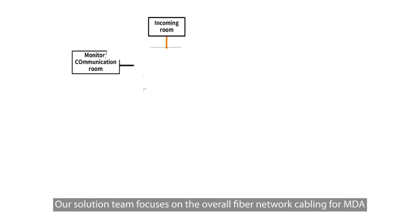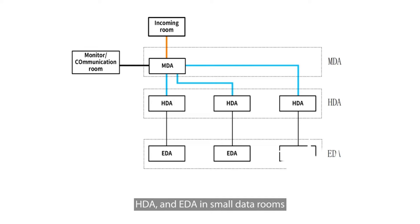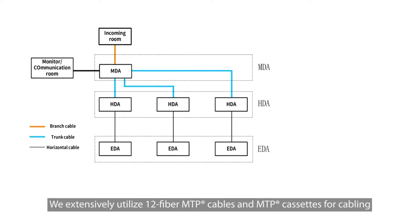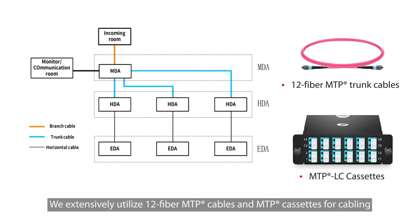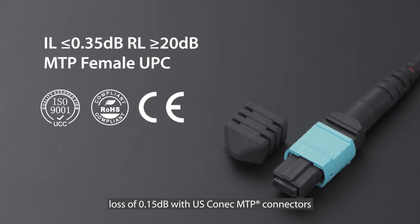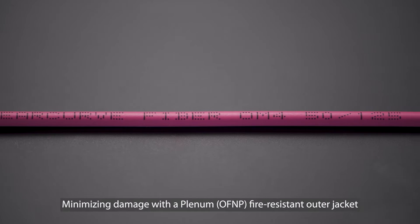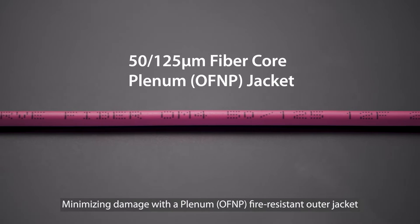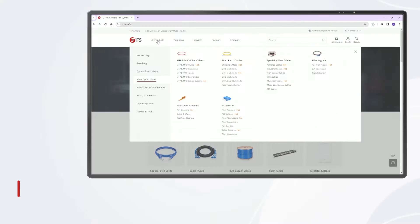Our solution team focuses on the overall fiber network cabling for MDA, HDA, and EDA in small data rooms. We extensively utilize 12-fiber MTP cables and MTP cassettes for cabling. The 12-core MTP cable achieves the lowest insertion loss of 0.15 dB with US Konec MTP connectors, minimizing damage with a plenum fire-resistant outer jacket, ideal for safe high-density cabling.